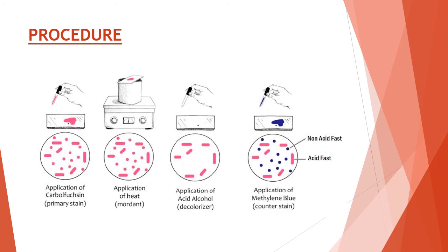Procedure of acid-fast staining: First, fix the smear of the specimen over a glass slide either by heating or alcohol fixation. For carbolfuchsin, flood the smear and heat gently until fumes appear. Do not overheat; allow it to stand for 5 minutes, then wash off with water.